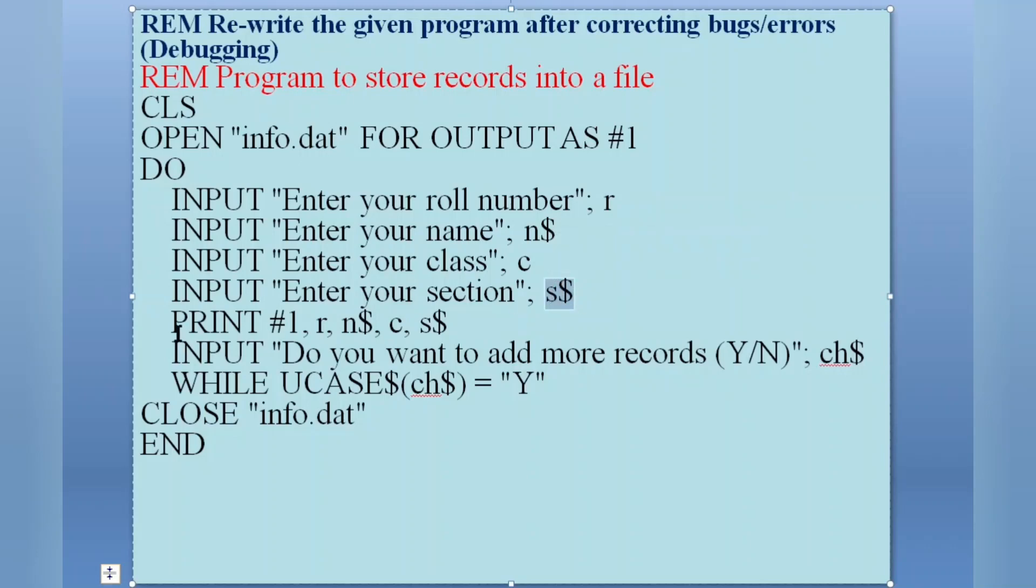After taking an input, we need to store the data. So to store the data into the file, we need to use WRITE statement, not the PRINT. So we need to use here WRITE #1. In which file we want to store? #1. This is the one - R for roll number, N$ for name, C for class, and S$ section. So all these data we are storing into this #1 file. This is what info.dat.